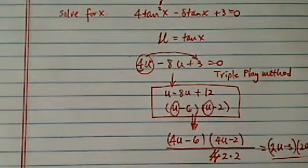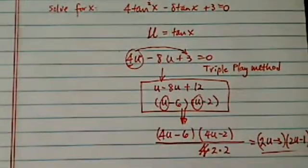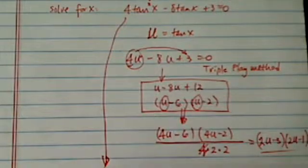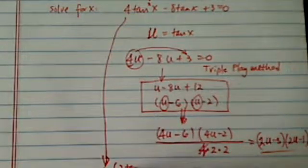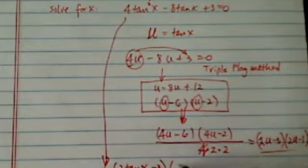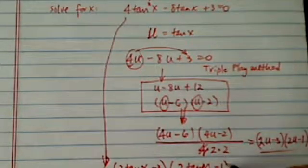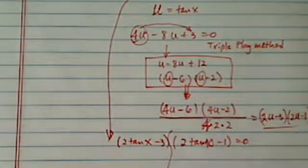So our original quadratic here is factored into 2 times tangent of x minus 3 times 2 times tangent of x minus 1 equal to 0. And then we're going to solve each one individually.